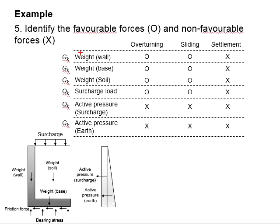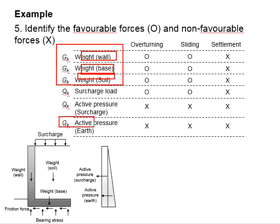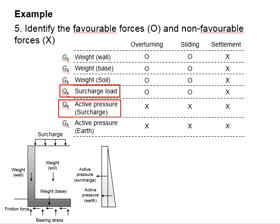Next, we list out all the forces acting on the retaining wall. Some are GK, which include the weight of the wall, weight of the base, weight of the soil, and also the active pressure due to the earth. While the others are QK, which include the surcharge and also the active pressure due to the surcharge.